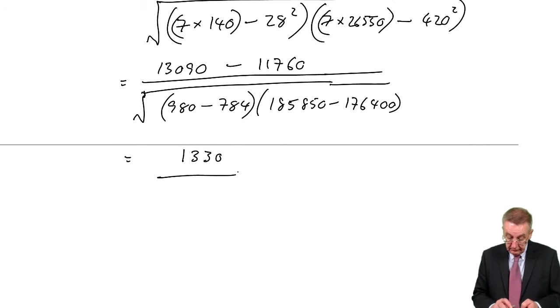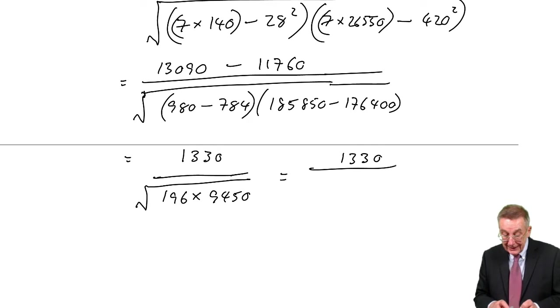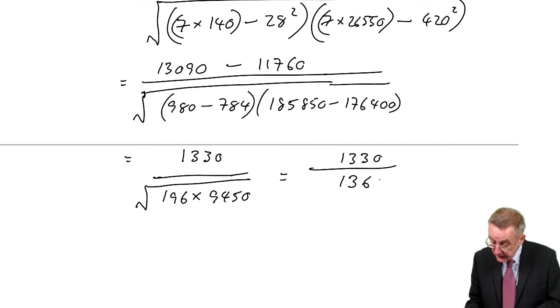Over the square root of 196 times 185,850 minus 176,400. 196 times 9,450 is 1,852,200. If I take the square root of it, I get 1361.